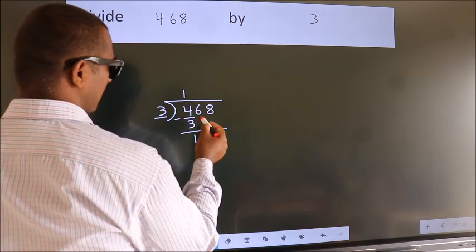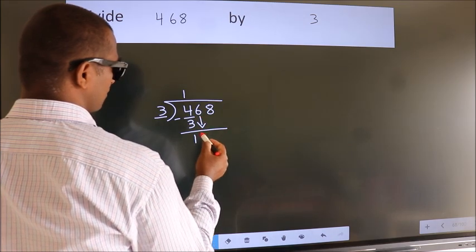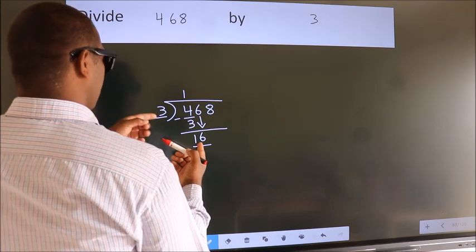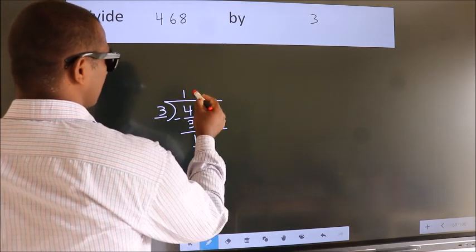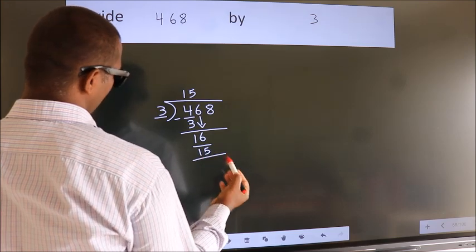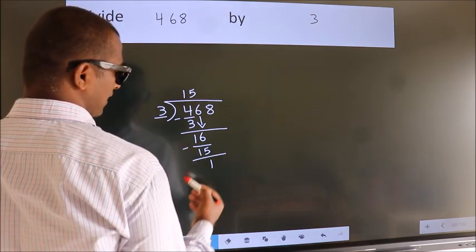After this, bring down the beside number. 6 down. So 16. A number close to 16 in 3 table is 3 fives, 15. We subtract and get 1.